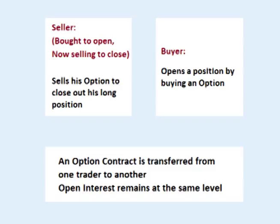However, if the buyer sells his contract to another buyer that is opening a new position, the first buyer closes his position by selling his existing option to the new buyer. No new contract is created and no existing contract is closed out. Rather, an existing contract is transferred from one owner to another. Therefore, Open Interest doesn't increase or decrease.